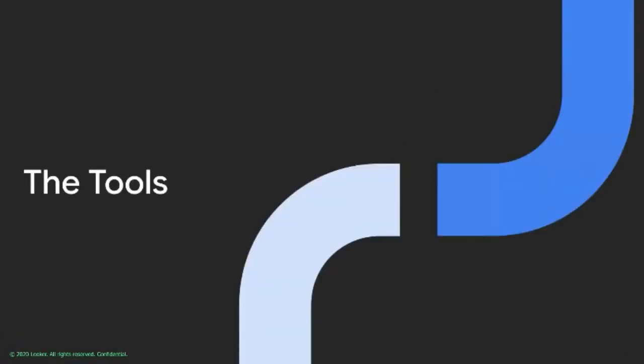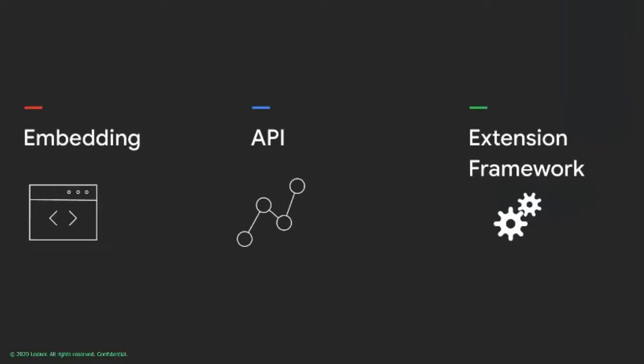Let's look at some Embedded Analytics tools. At a high level, we have three core platform features that Looker offers: embedding with iFrames, our RESTful APIs, and the extension framework. iFrames allow our customers to embed almost any object from Looker — dashboards, single visualizations, or explore screens — into any application. Our RESTful API allows customers to get data and perform tasks. And the extension framework allows customers to execute JavaScript right on the Looker platform, extend Looker's functionality, and host their applications on Looker.